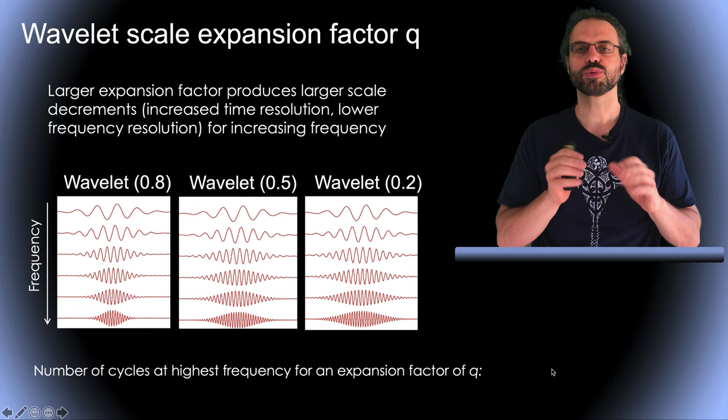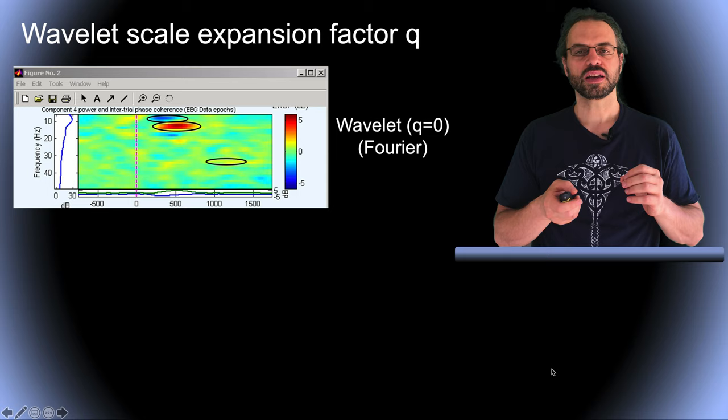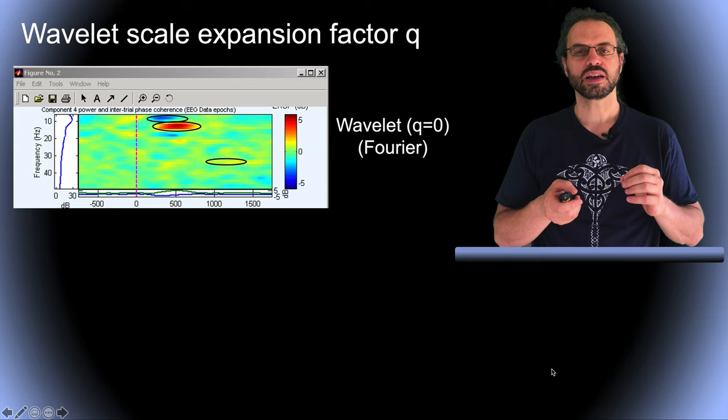On this slide, I show some plots obtained with EEGLAB. Here, you see how a scale expansion factor of 0 produces smearing across time at all frequencies. And again, this is equivalent to performing a short time Fourier transform. And here, you see a scale expansion factor of 1 produces smearing across frequencies for all time windows.